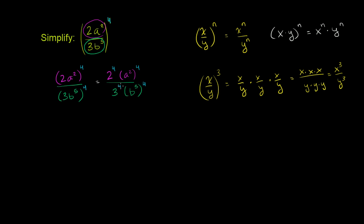Now we can evaluate what these numbers come out to be. 2 to the fourth: 2 squared is 4, 2 to the third is 8, 2 to the fourth is 16. So that term is 16. For 3 to the fourth: 3 squared is 9, 3 to the third is 27, 3 to the fourth is 81. So that term is 81.